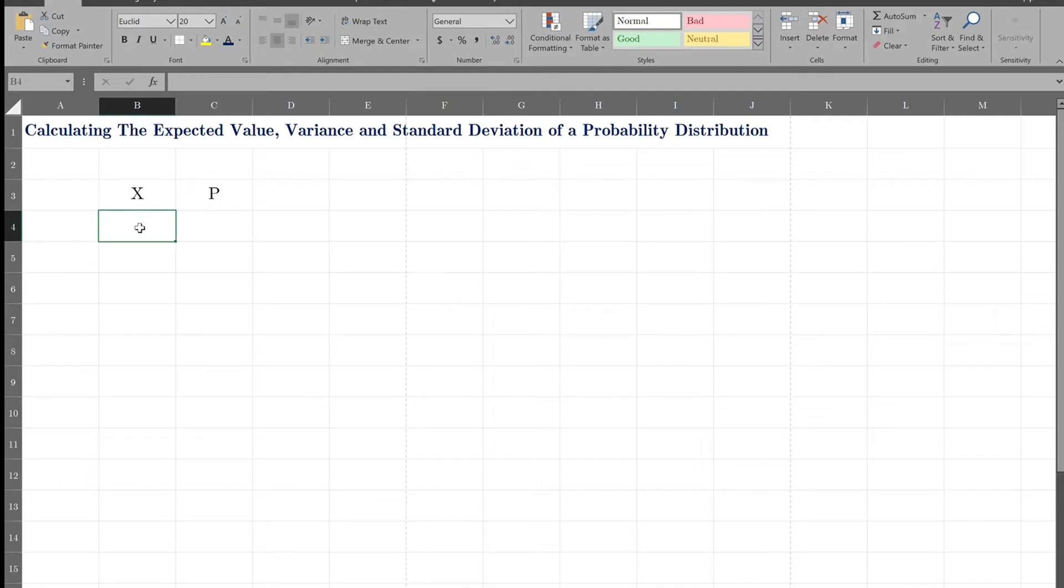For this, I'll be taking an example of the experiment of rolling a die. The outcomes are one, two, three, four, five, six. The probabilities are one out of six for all of them. We already know that.